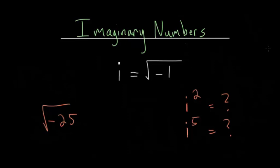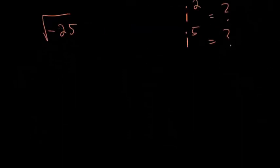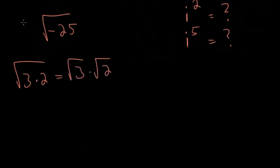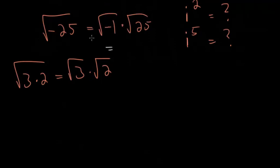Let's start with the square root of minus 25. When you have square roots in general, you can break them up into a product of square roots. For instance, the square root of 3 times 2 can be broken into the square root of 3 times the square root of 2. So we do the same here and break this up into the square root of minus 1 times the square root of 25. The square root of minus 1 is i, and the square root of 25 is 5, giving us i times 5, or 5i.